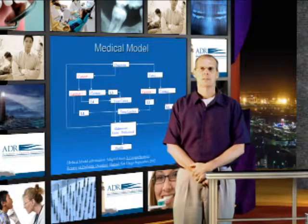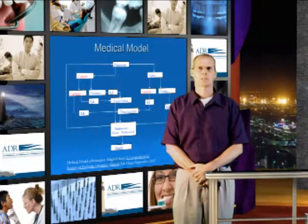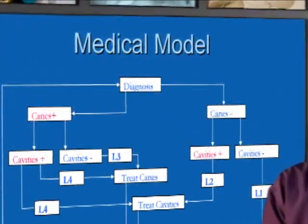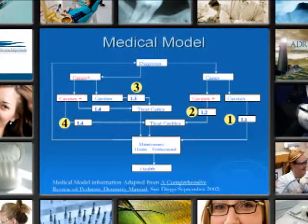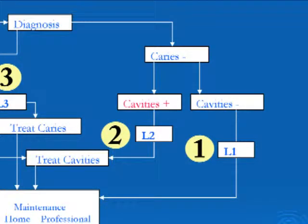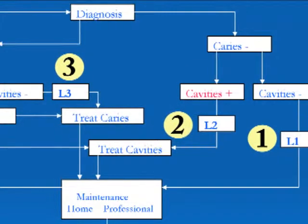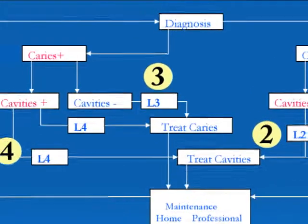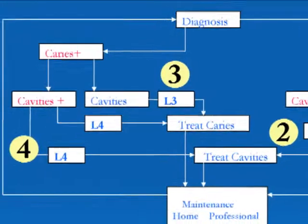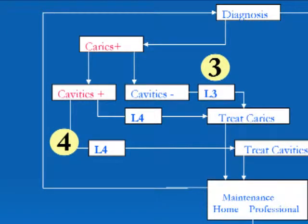We use a medical model approach to help us diagnose and treat our patients and recommend where they're going to be treated. We classify them in four different levels: level one, level two, level three, and level four. A level one patient does not have the caries process and does not have cavities. A level two patient does not have the caries process, yet might have a few cavities. The level three patient has the caries process and no cavities, and a level four patient has the caries process and cavities.